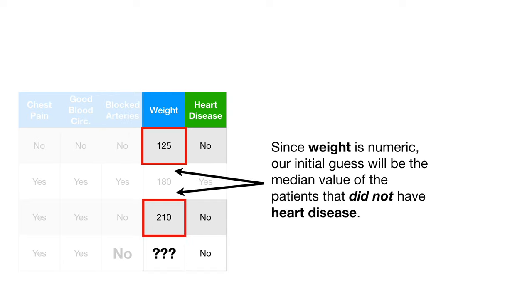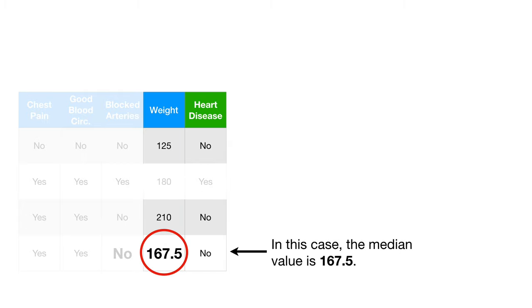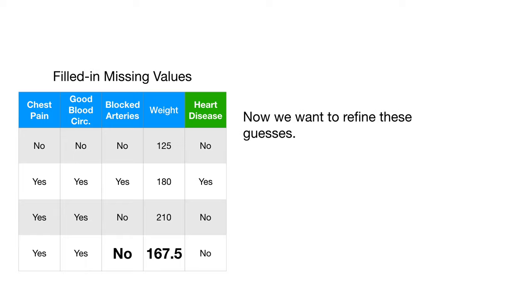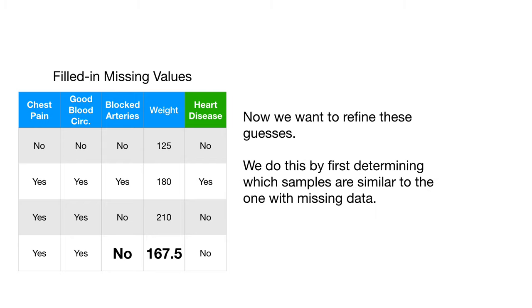Since weight is numeric, our initial guess will be the median value of the patients that did not have heart disease. In this case, the median value is 167.5. Here's our new data set with the filled in missing values. Now we want to refine these guesses. We do this by first determining which samples are similar to the one with missing data. So let's talk about how to determine similarity.